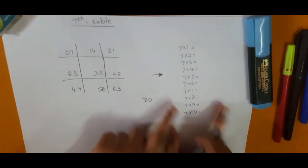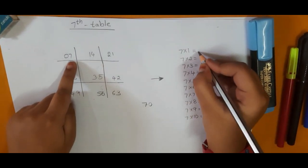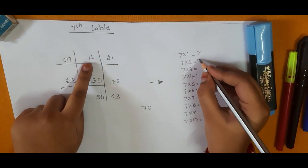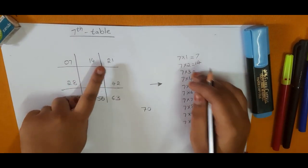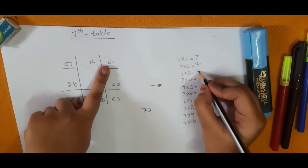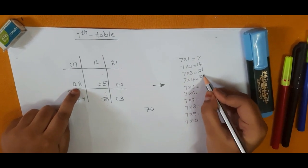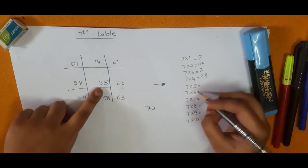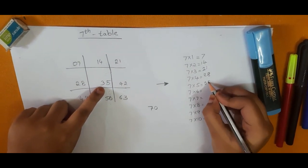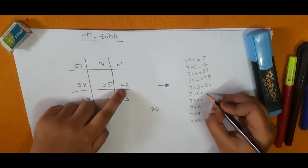Let's transfer here. Seven ones are seven, seven twos are fourteen, seven threes are twenty-one, seven fours are twenty-eight, seven fives are thirty-five, seven sixes are forty-two.